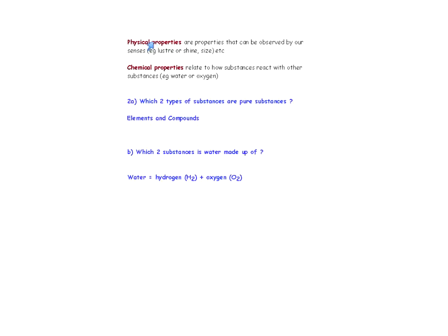Let's talk about the differences between physical properties and chemical properties. Physical properties are properties that can be observed with our senses — our eyes, ears, things we can smell. For example, luster or shine is a physical property of metal, and the size of a substance is also a physical property. Chemical properties relate to how substances react with other substances — for example, how metal reacts with water or with oxygen.